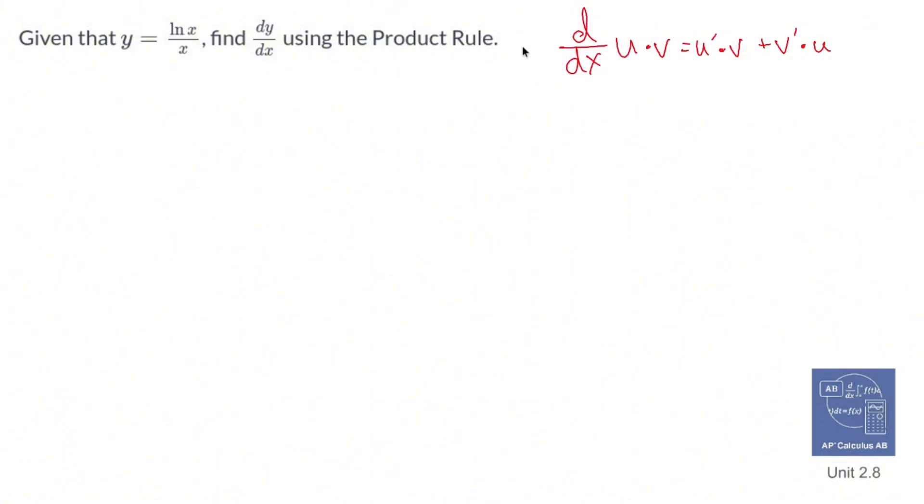But if I were to pretend there's an invisible one right there and move it to the top by using a negative exponent, then I'm cooking with gas. So that's exactly what I'm gonna do - I'm gonna make that x to the negative one, move it to the numerator, and then multiply it to ln of x and apply this rule.